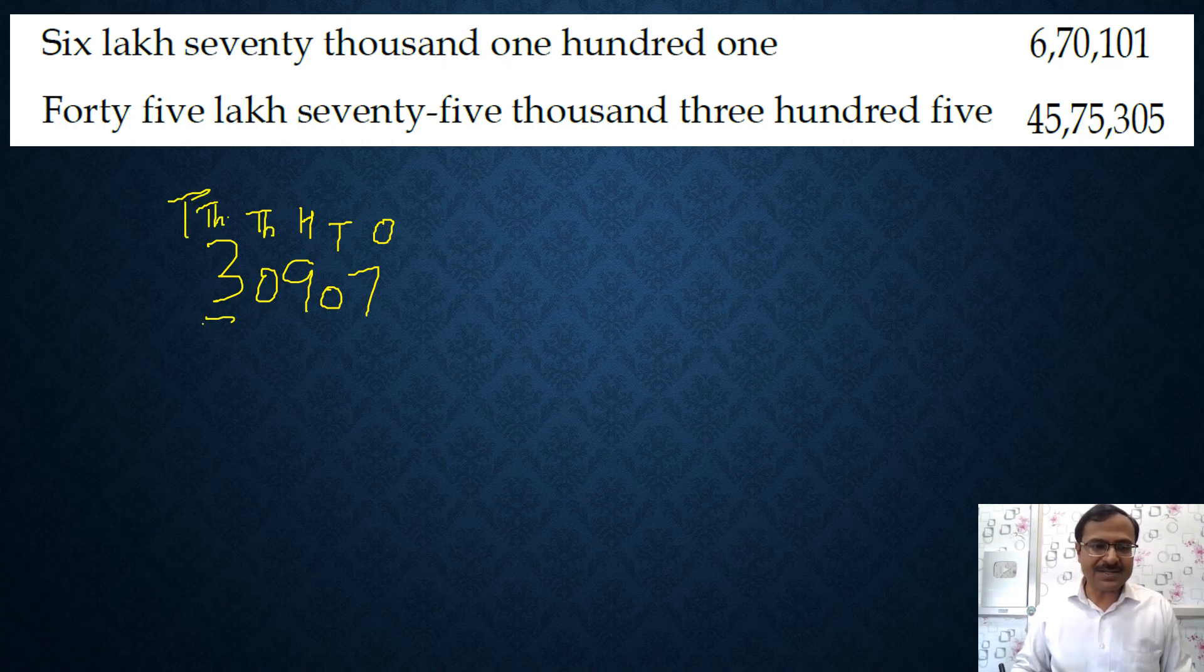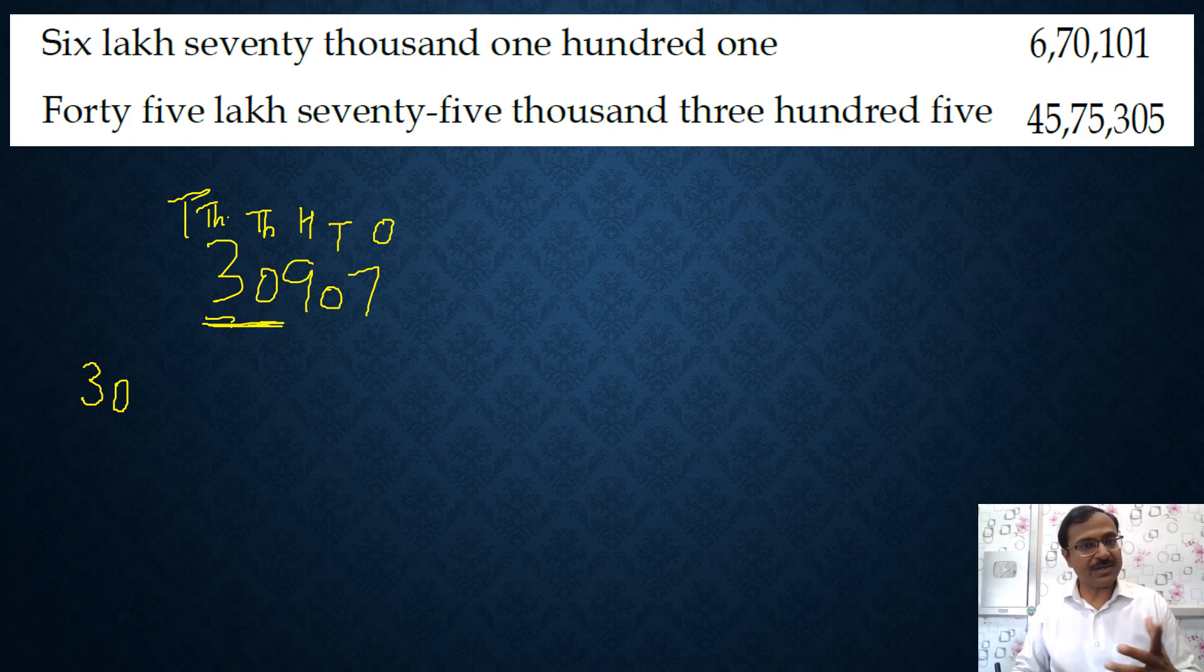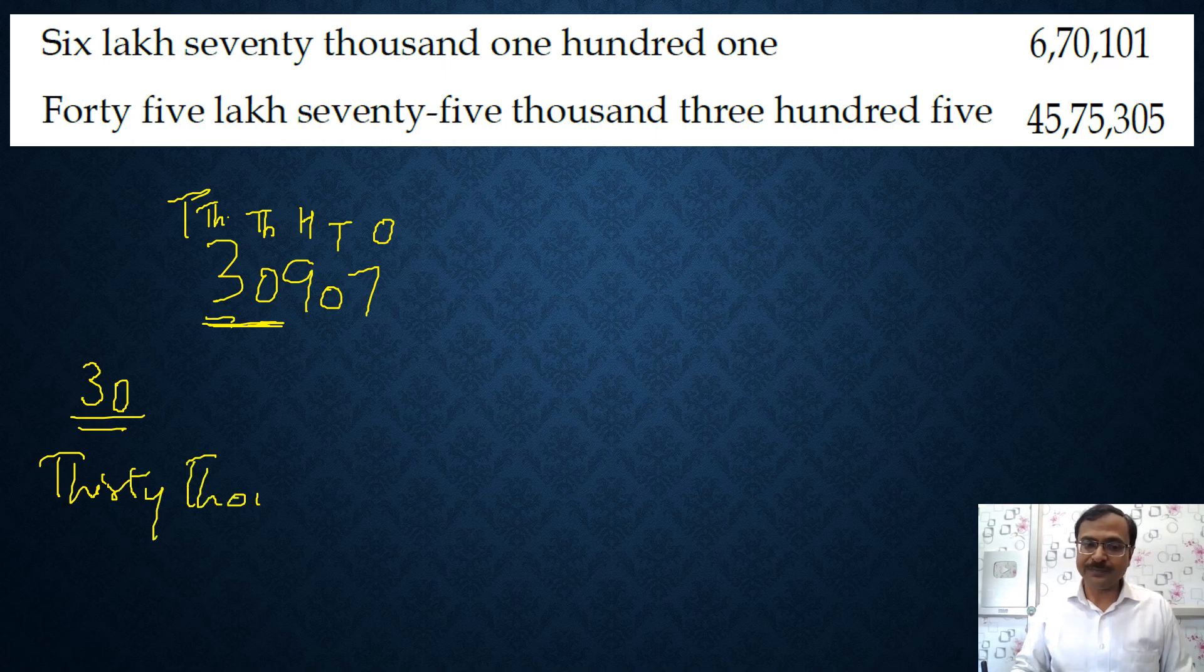You should know that this is ones, tens, hundreds, thousands, and ten thousands. So this is 3 times ten thousand, so that is thirty thousand. So three and zero, I think this can be combined. Why? Because the thousands are thirty here, thirty thousands.